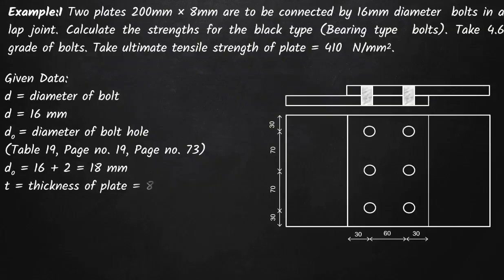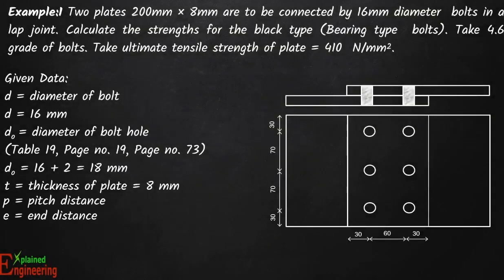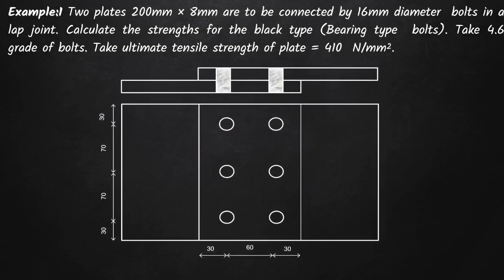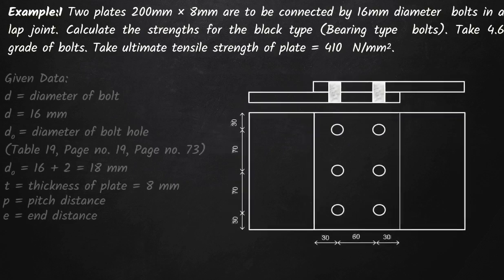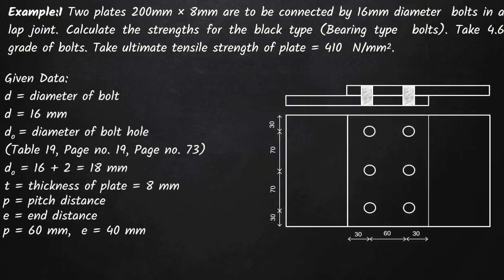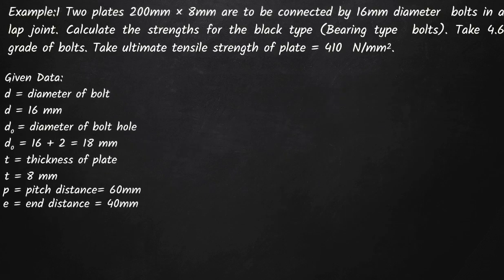We have to calculate the pitch and end distances. From the given diagram, if a tensile load is applied, the center-to-center distance between two bolts in the direction of loading is the pitch distance, and the distance between the edge of the plate and the center of the bolt in the direction of loading is the end distance. As per the diagram, the pitch distance p equals 60mm and the end distance e equals 40mm.